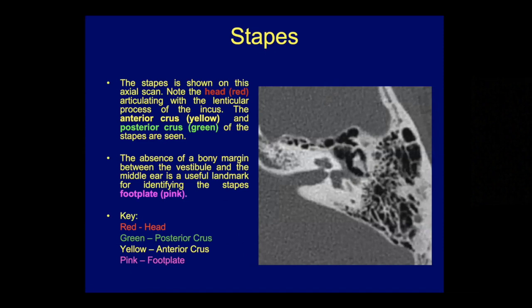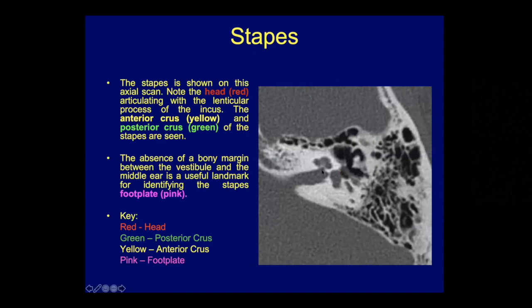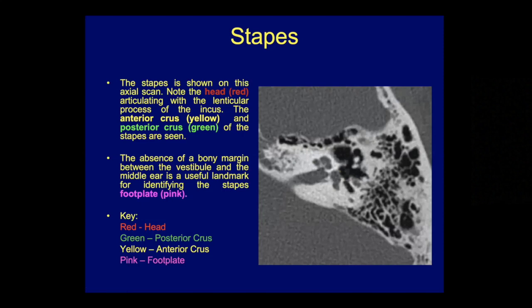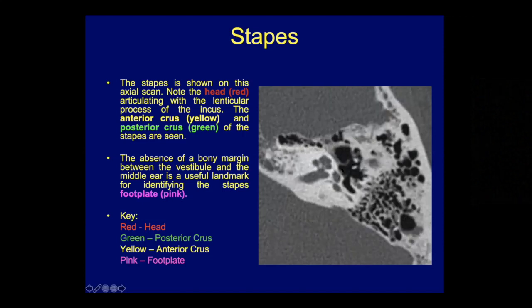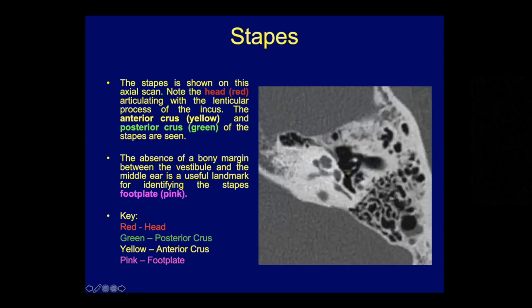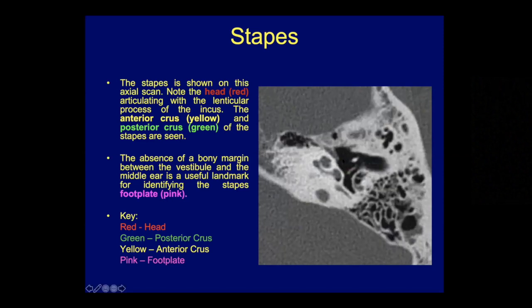Going through the anatomy of the stapes from top to bottom: starting a little lower since the stapes is lower on the medial wall of the middle ear. The cochlea, internal canal, and vestibule are visible, with the stapes footplate marked in pink, the anterior crus in yellow, and the posterior crus in green. The head of the stapes is marked in red. Coming through the slices, the footplate is clearly marked with the base of the anterior and posterior crura. As we come down the two crura converge, and the head of the stapes appears in red where it contacts the lenticular process of the incus.